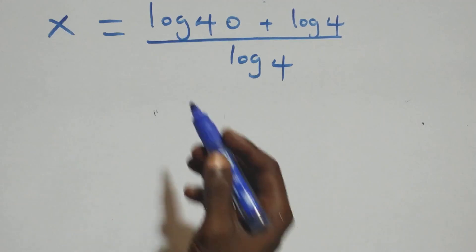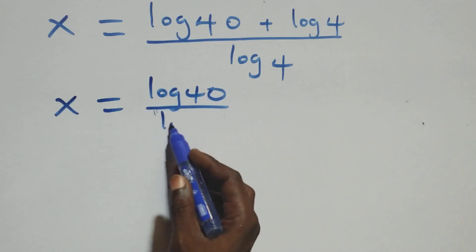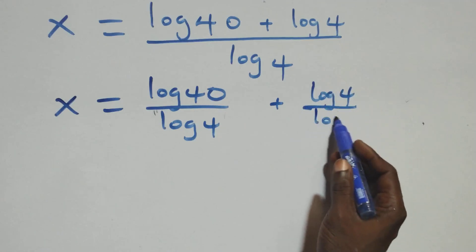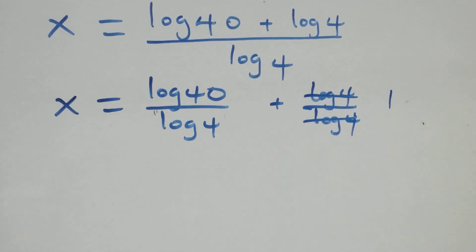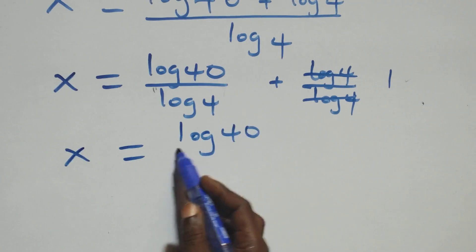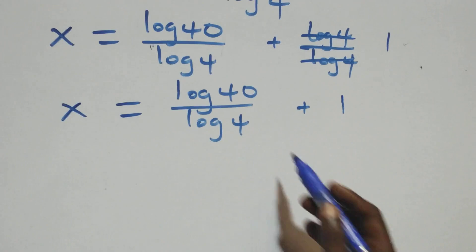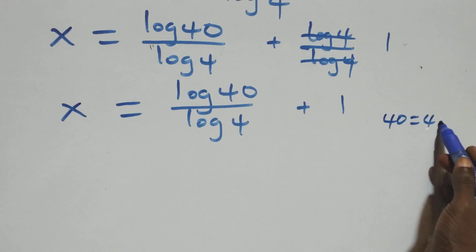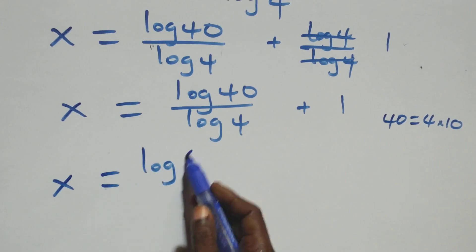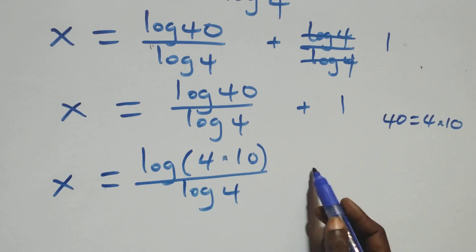So we have x equals log 40 over log 4 plus log 4 over log 4, which gives us x equals log 40 over log 4 plus 1. Also, 40 can be written as 4 times 10, so x equals log(4 × 10) over log 4 plus 1.